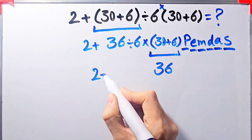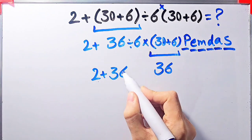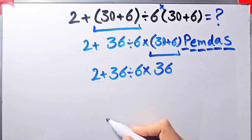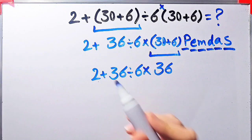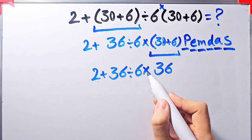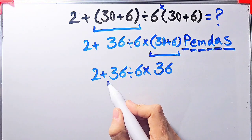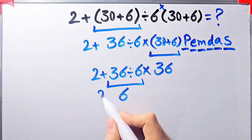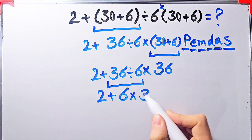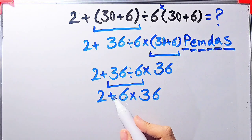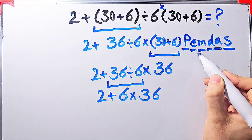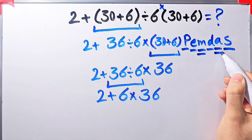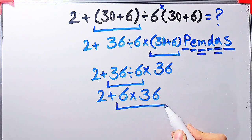Now the question is 2 plus 36 divided by 6 times 36. We have addition, division, and multiplication. First we simplify the division: 36 divided by 6 equals 6. Now we have 2 plus 6 times 36. We have addition and multiplication, so we simplify the multiplication first because multiplication has higher priority than addition: 6 times 36 equals 216.